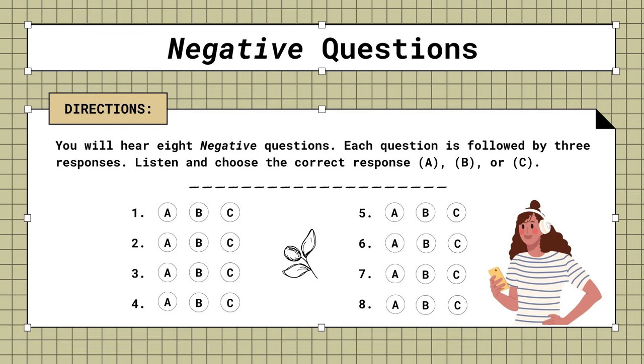8. Won't you join me for dinner? A. I enjoyed it a lot. B. Thanks, I'd love to. C. No, I'm a beginner.